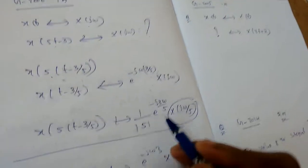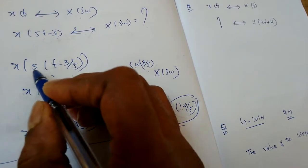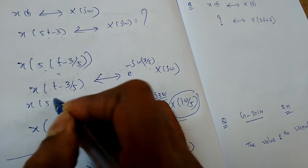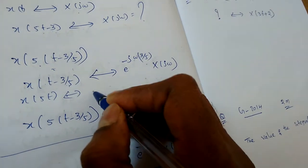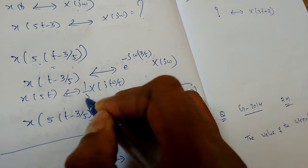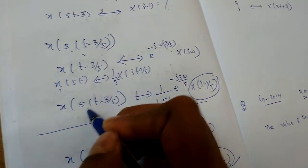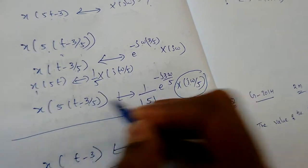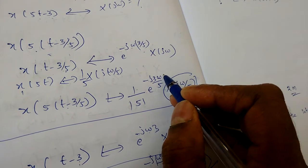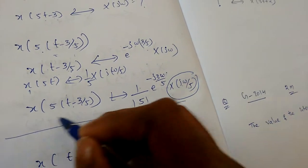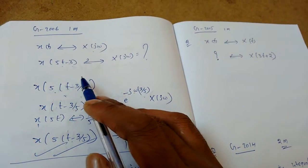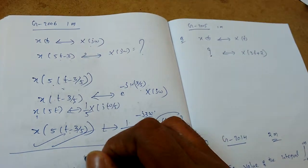Alternatively, first do the scaling x(5t), which gives (1/5)·X(jω/5), then apply shifting by t − 3/5, which multiplies by e^(−jω·(3/5)). So t₀ = 3/5. This is also correct. These are the scaling and shifting properties we need to use.